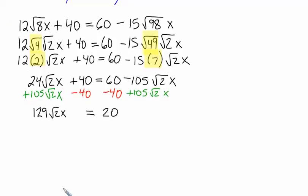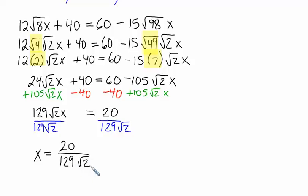Now we need to divide both sides of this equation by radical 2 and 129 in order to get the x by itself. Then we get that x is equal to 20 divided by 129 radical 2. Be careful. We can't leave it in this form. We need to get that square root off the bottom. So we're going to multiply by radical 2 over radical 2.